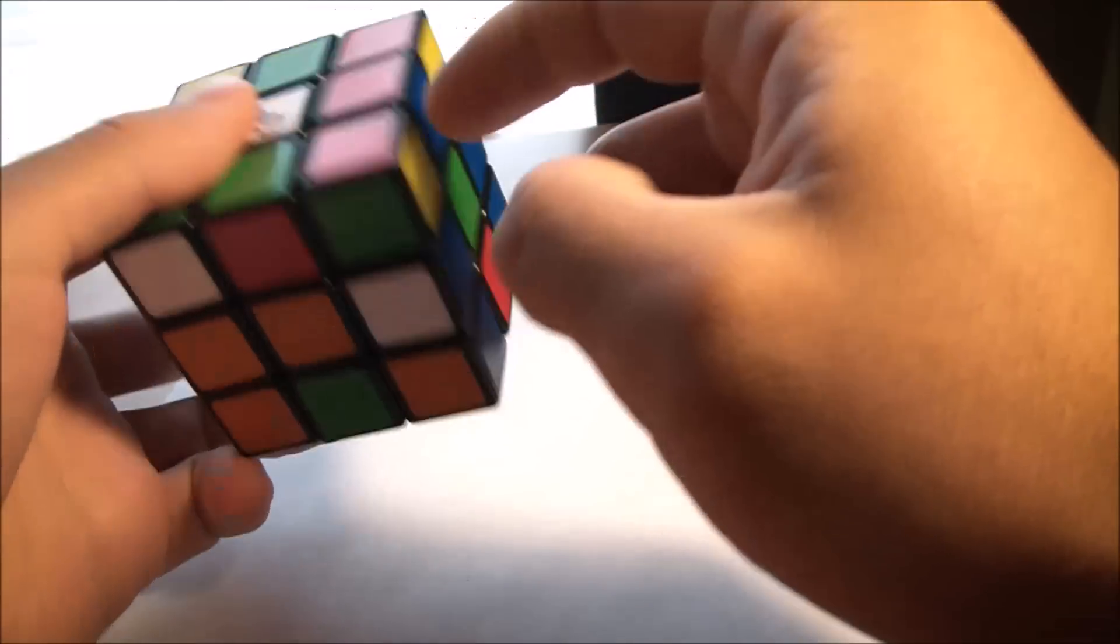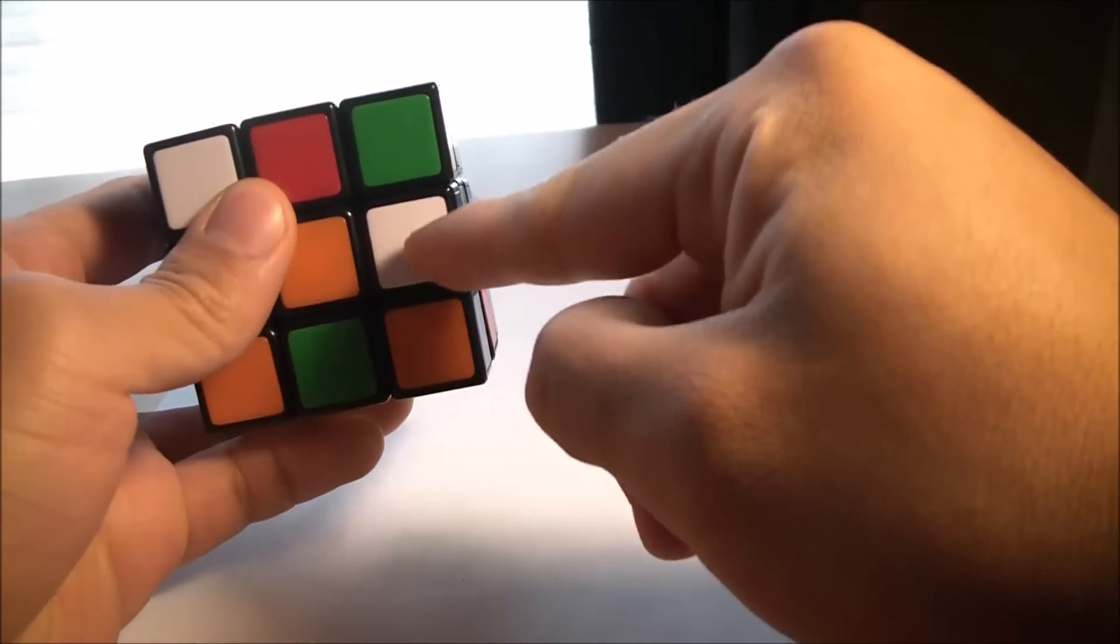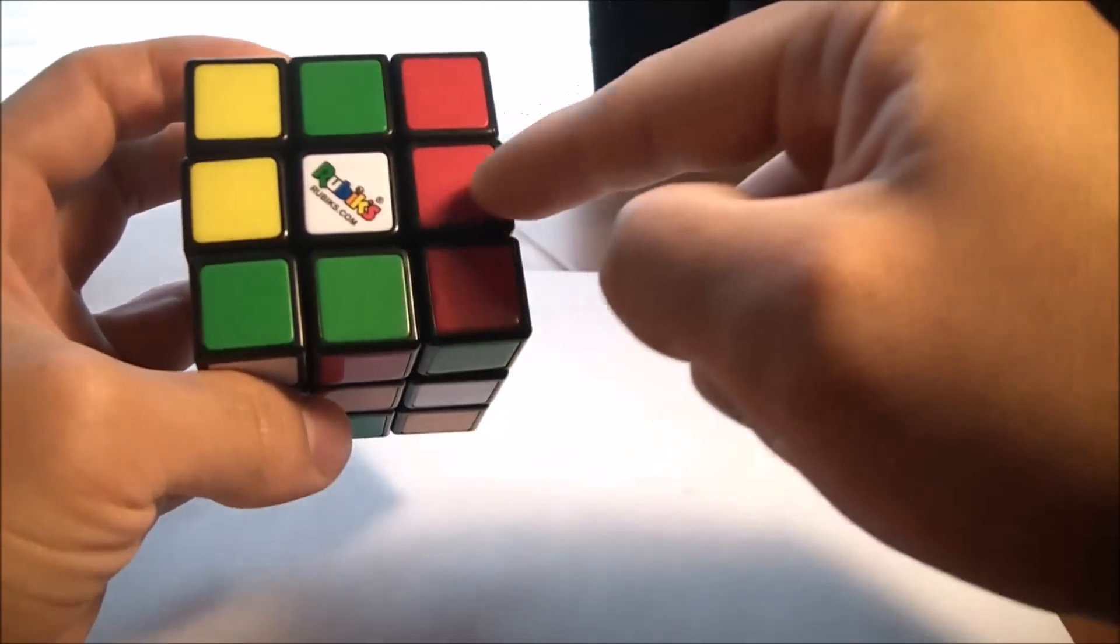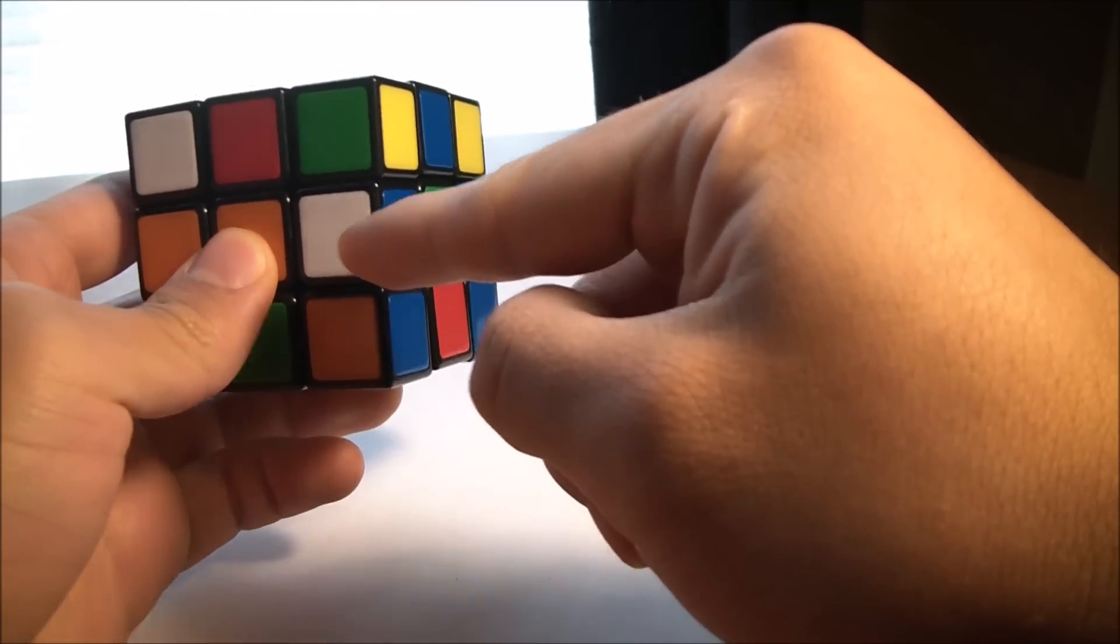That means if this is a white edge piece—edge pieces, we're looking for edge pieces—the edge pieces create the white cross. But this piece right here is a white and blue-sided edge.